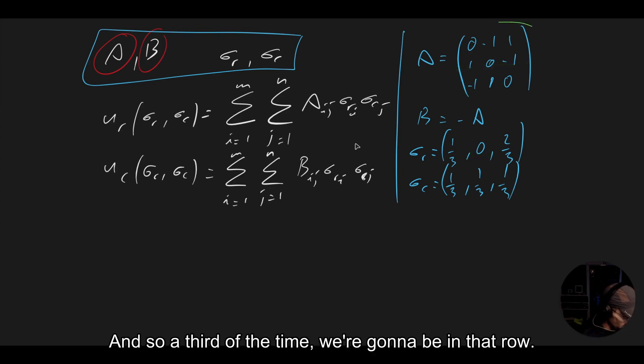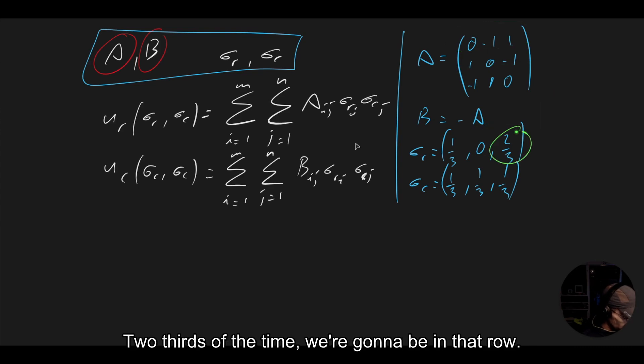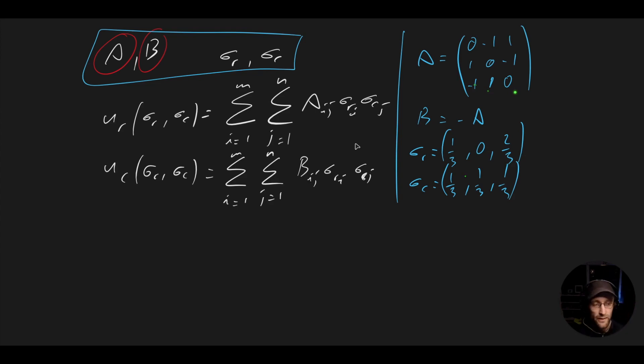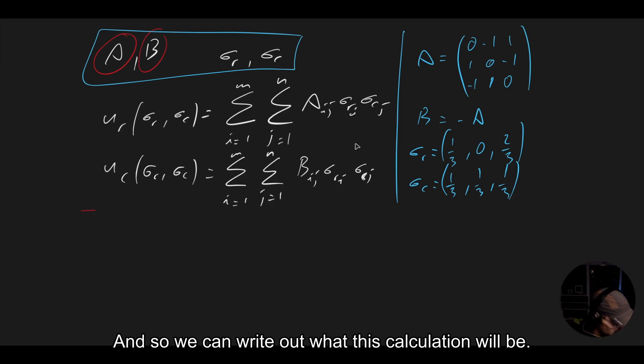This row is never happening because we have a zero there, and so a third of the time we're going to be in that row. That's what that a third says. Two thirds of the time we're going to be in that row. And then we're going to be in every column an equal amount of time.